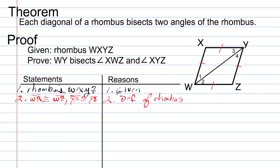By writing it that way, in the top triangle this side is congruent to this side, and this side is congruent to this side. Next, using the reflexive property, segment W-Y is congruent to segment W-Y. That's because of the reflexive property of congruence.